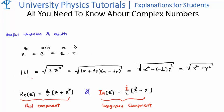I've listed some other useful identities and results with regard to complex numbers here, and I suggest you pause the video if you want to take them in. The most important, probably, is how to take the magnitude of a complex number by taking the square root of z and its complex conjugate.